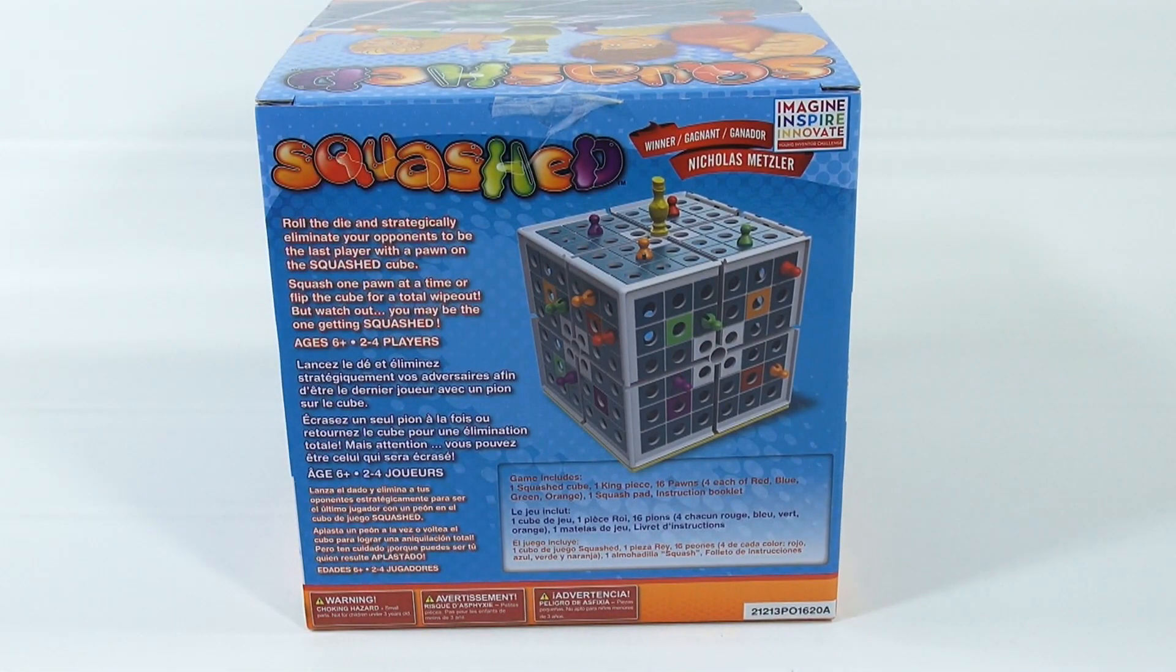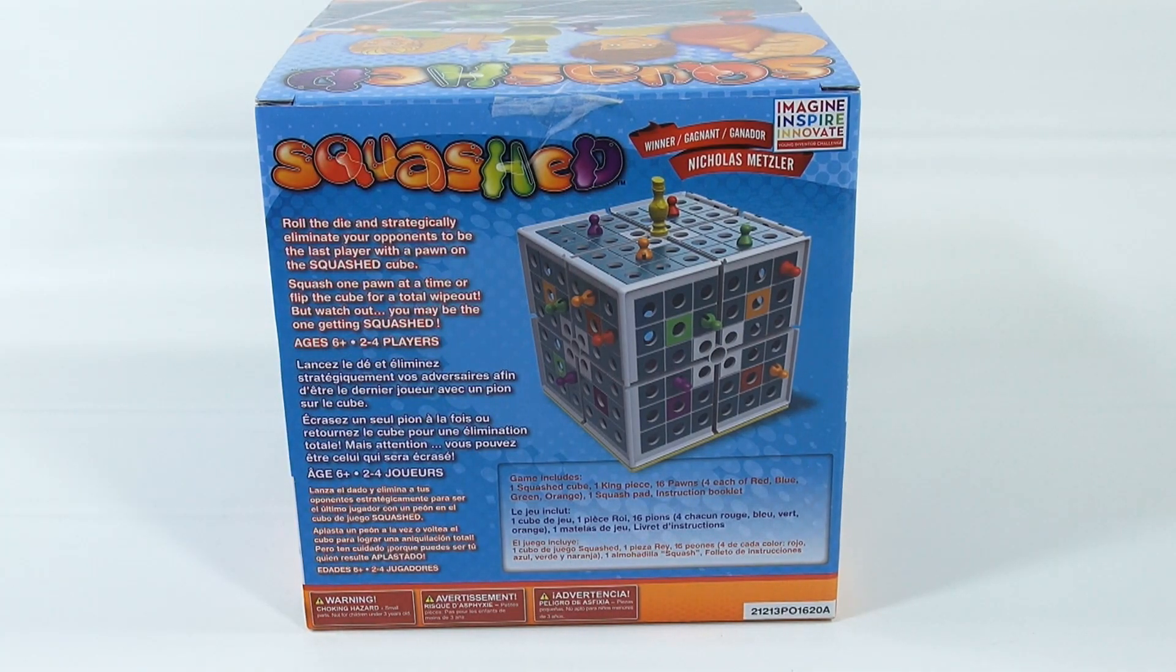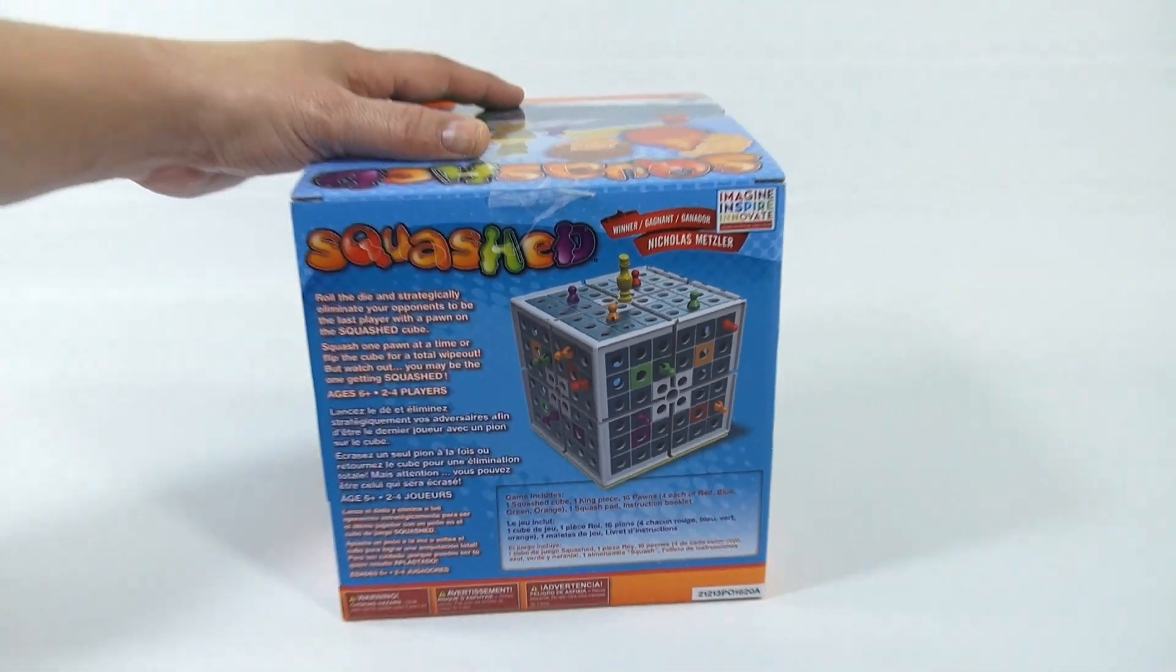Here's the back of the box. Roll the die and strategically eliminate your opponents to be the last player with a pawn on the squash cube. Squash one pawn at a time, or flip the cube for a total wipeout. But watch out, you may be the one getting squashed. Alright, and I'll show you why and how neat this game is if you think about it.